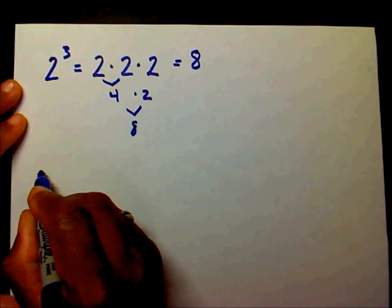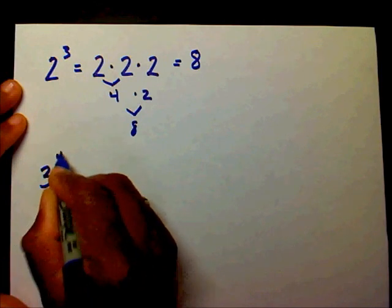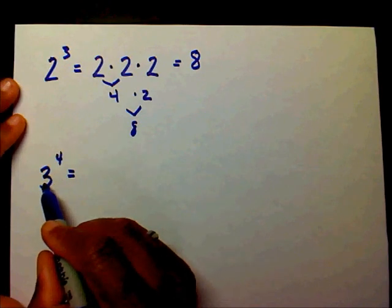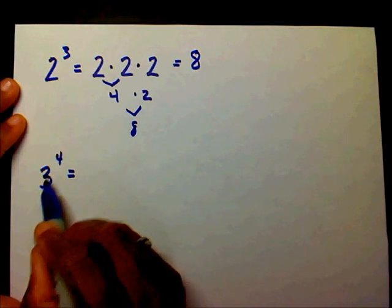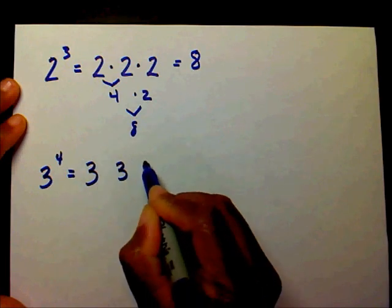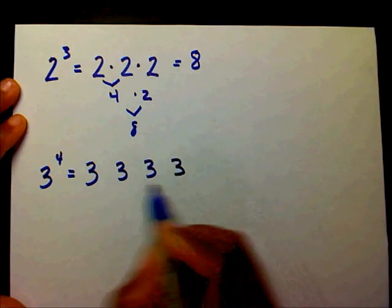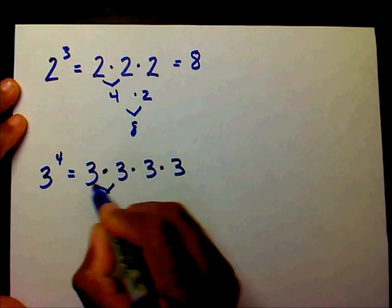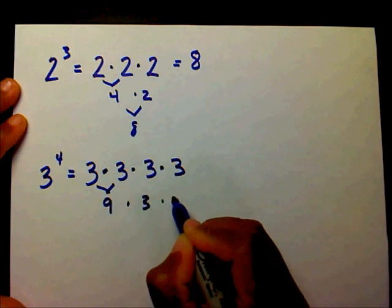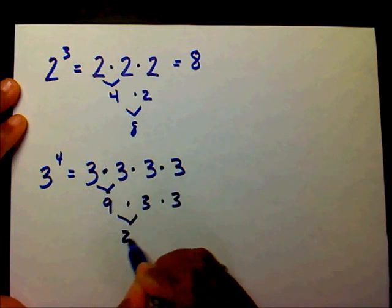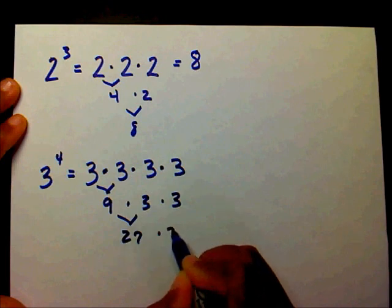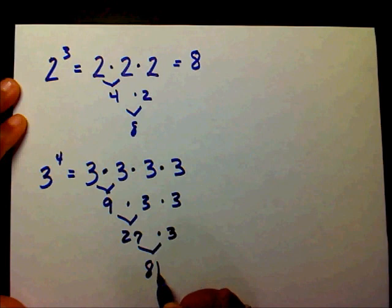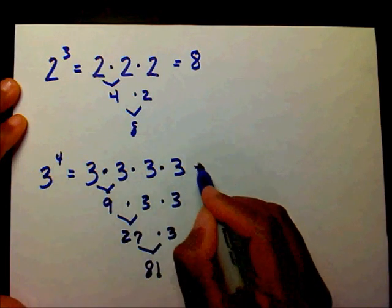Let's do another one. I have 3 to the fourth power. So that means I'm going to write 3 down 4 times and I'm going to multiply them. 3 times 3 is 9, 9 times 3 is 27, and 27 times 3 is 81. So therefore, 3 to the fourth power equals 81.